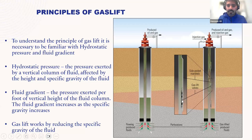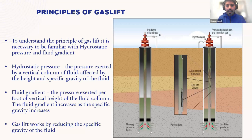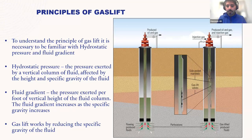The gas passes through the gas lift valve and mixes with the formation fluid. Once you pump gas into the fluid in the tubing, it decreases the specific gravity of that fluid. Once specific gravity decreases, the bottom hole pressure decreases, allowing more formation fluid to flow into the tubing. The reduced density then pushes the fluid all the way to the surface.